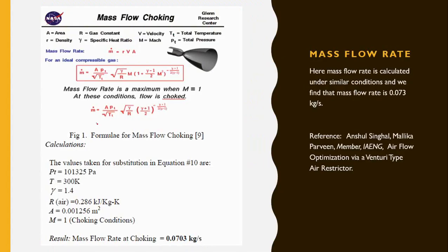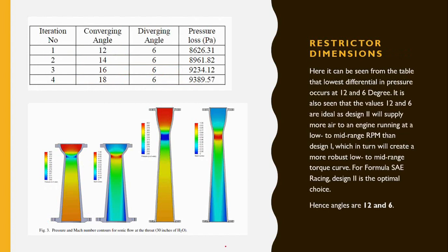This slide shows the mass flow rate formula and how it affects the system. Through deep research, I found that converging and diverging angles of 12 degrees and 6 degrees respectively result in the least pressure loss. That is your aim — you want the pressure loss to be as minimum as possible.